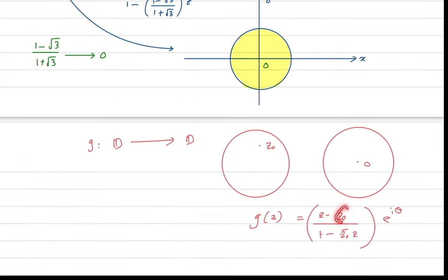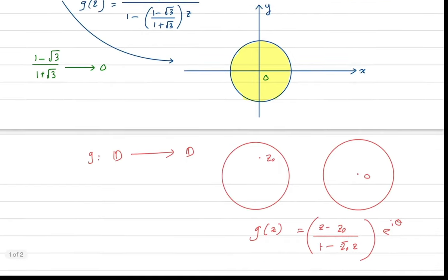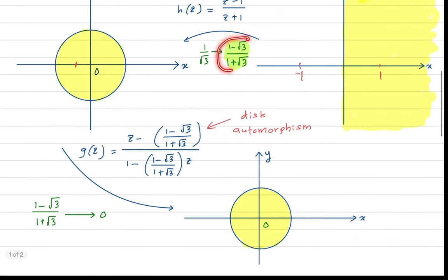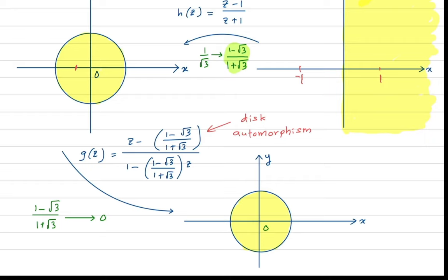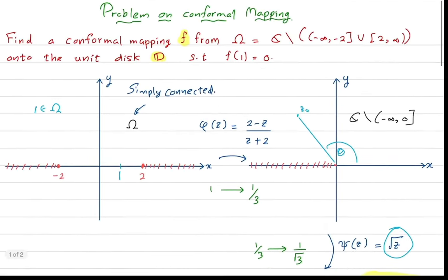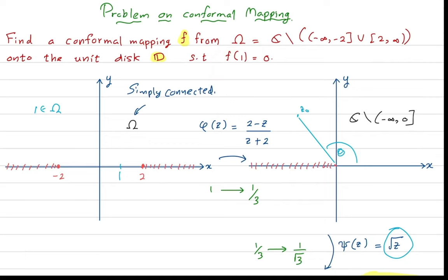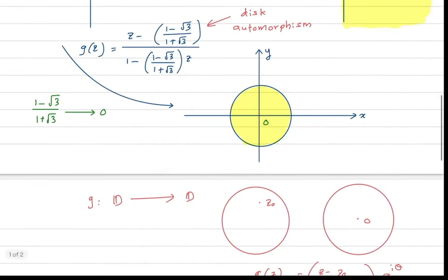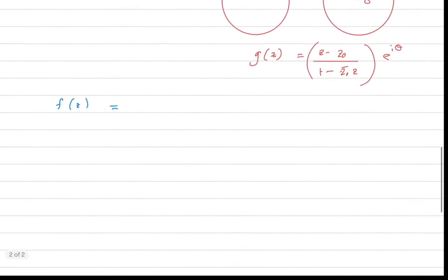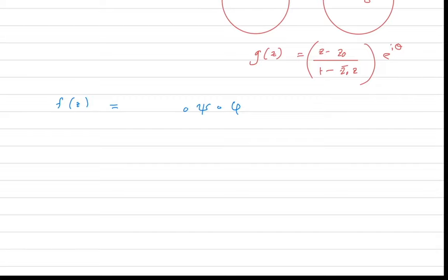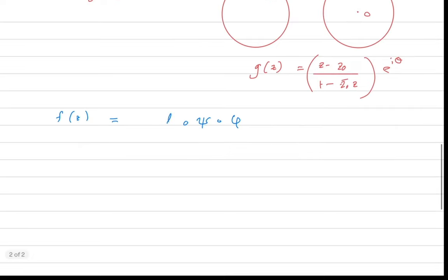So I replace z naught by one minus square root of three over one plus square root of three in both numerator and denominator. This map g sends that point to the origin. The final conformal map f(z) is the composition: first apply the Möbius map phi, then the square root h, then the disk automorphism g.